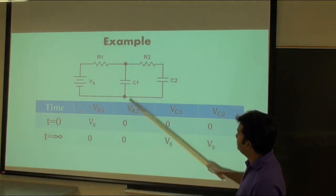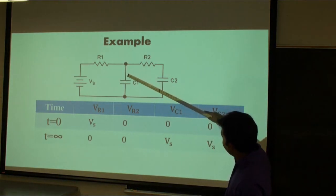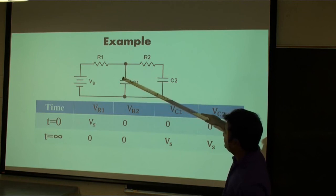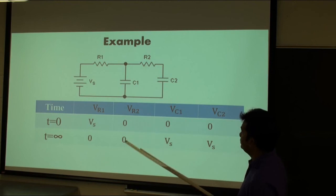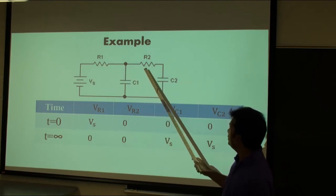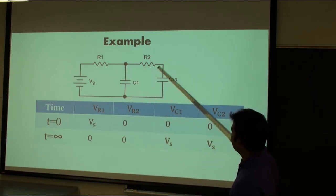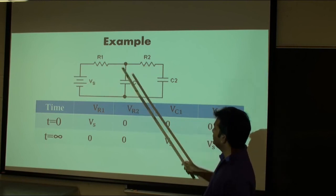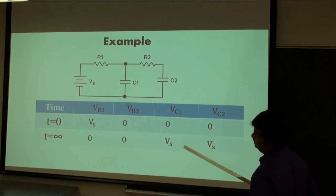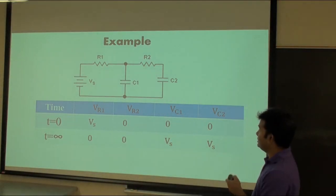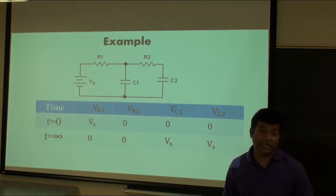After a long time, both capacitors are open circuit, so current cannot pass through either branch. There will be no current through R1 or R2, so the voltage across R1 or R2 will be zero. As these two capacitors are in parallel and connected to the battery, the voltage across C1 or C2 will be the same and equal to Vs. In lab, we will have several examples like this, and I hope you will be able to solve everything. Thank you very much for watching the video.